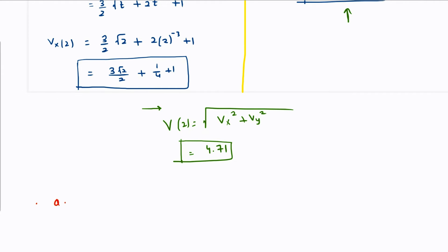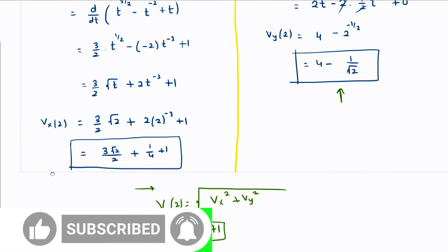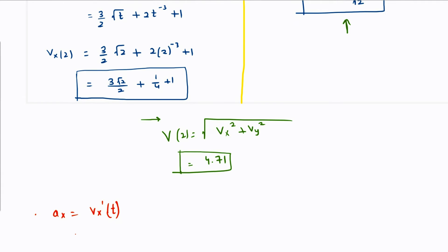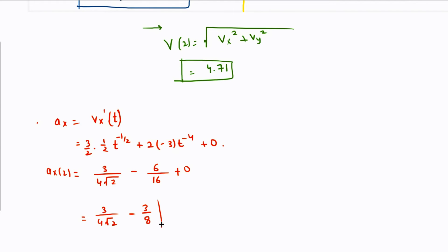Now working on acceleration. Acceleration in the x direction is Vx prime. Differentiating Vx: 3/2 times 1/2 gives t raised to minus 1/2, and minus 3 times t raised to minus 4. So ax at t equal to 2 is 3 over 4 root 2 minus 6 over 16, which simplifies. The 2 is a common factor giving 3 over 8 for that term.